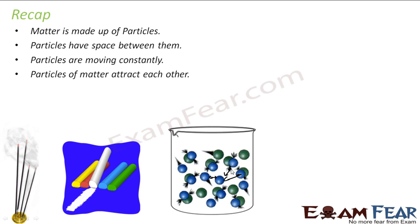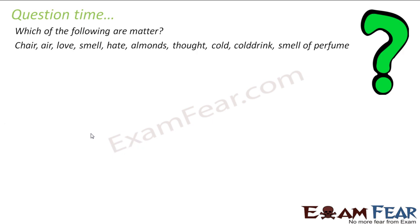Diamond is very strong because it forms a very complex crystal-like structure and there is a huge force of attraction between its particles. Chalk is easy to break because the force of attraction between its molecules or particles is much less.